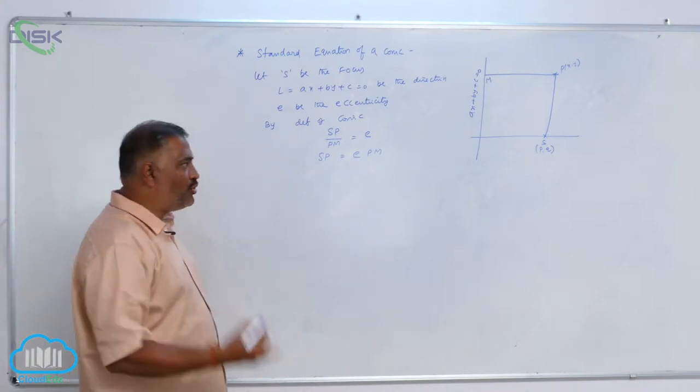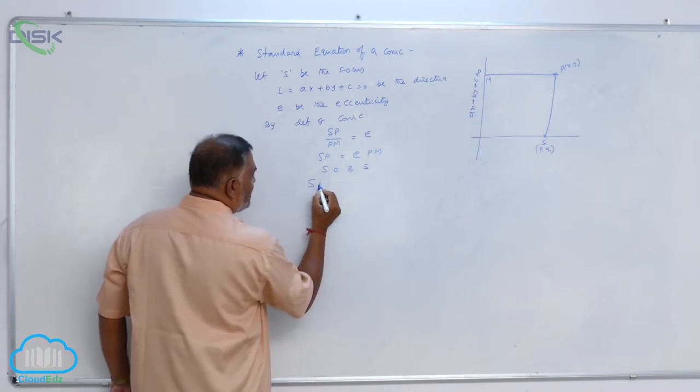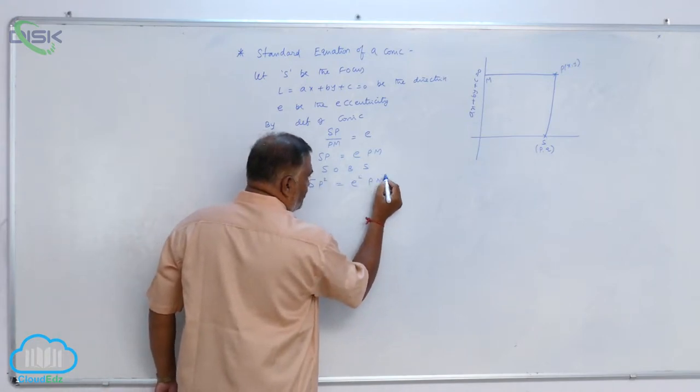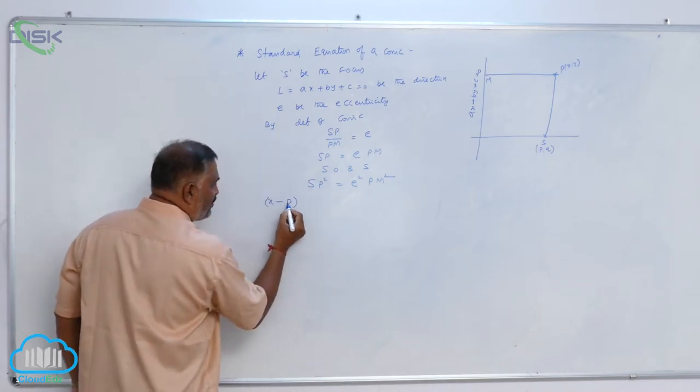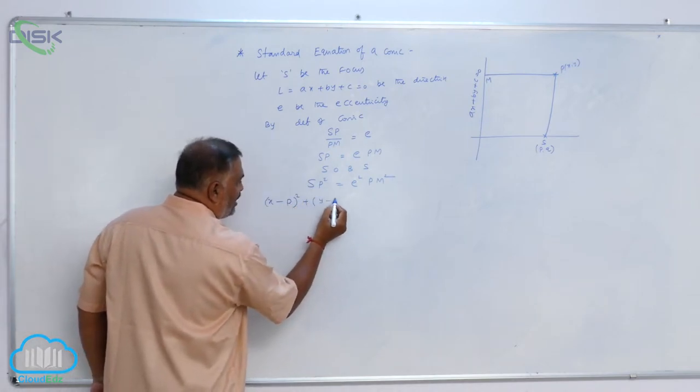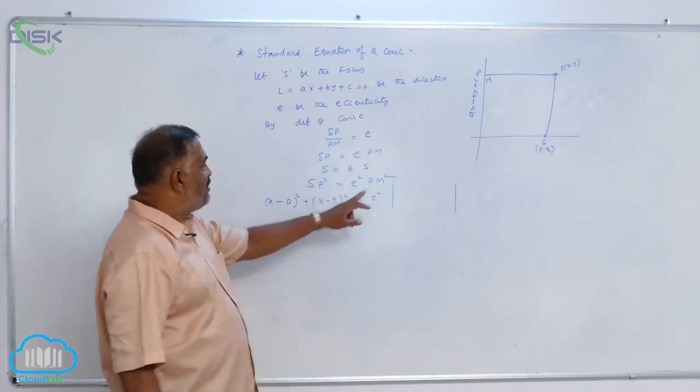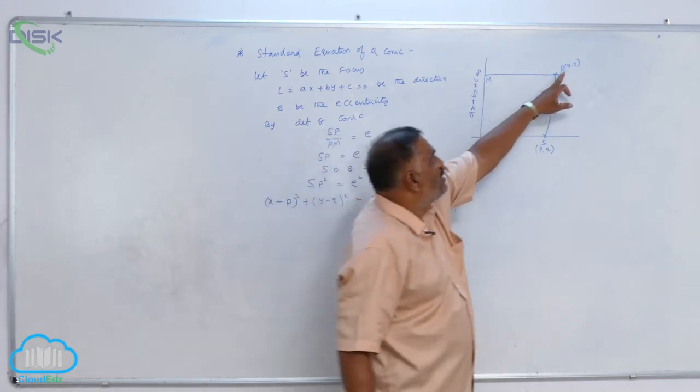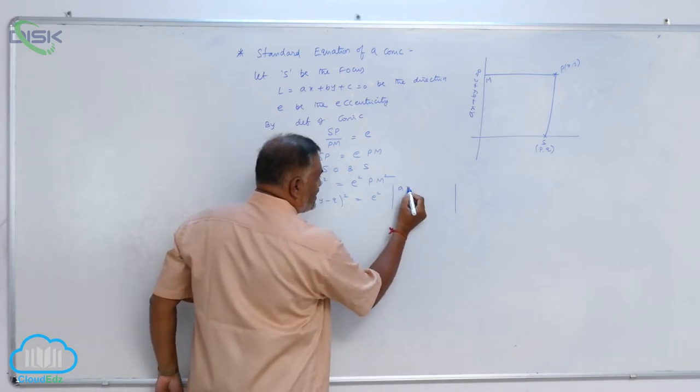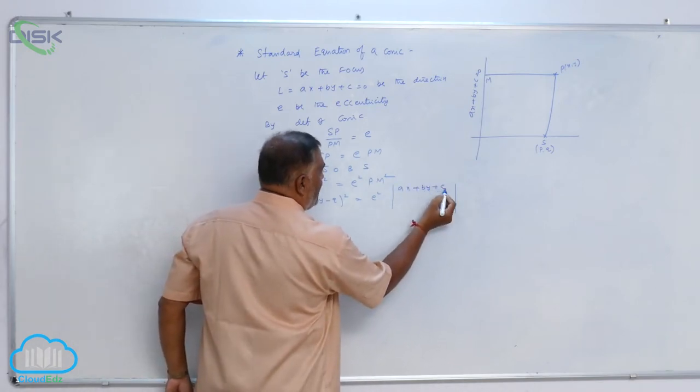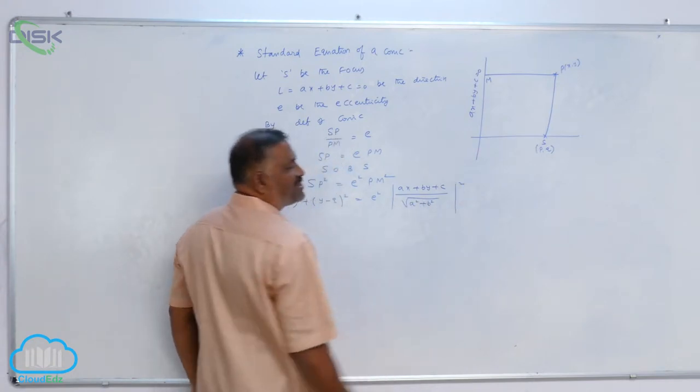Now, squaring on both sides, SP square is equal to E square PM square. That is, (X minus P) whole square plus (Y minus Q) whole square is equal to E square into PM, which is nothing but perpendicular distance from (x,y) onto this line. That is, (Ax plus By plus C) divided by square root of (A square plus B square) whole square.